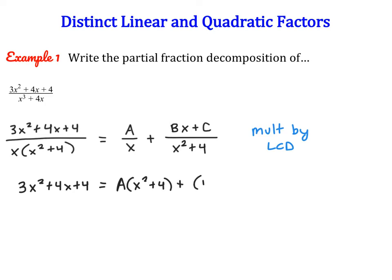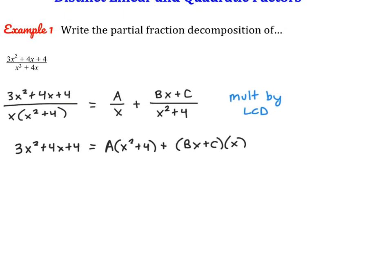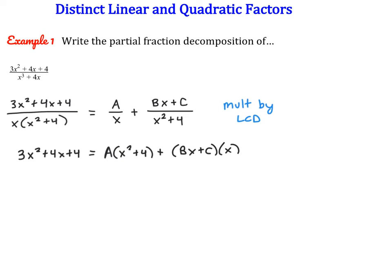For the second term, we end up with Bx plus C times x, because the x squared plus 4 terms cancel out. We're going to take a slightly different approach to solving these types of equations. Previously we substituted convenient values to eliminate terms, but here our general strategy is to create a quadratic equation equal to a quadratic equation and then match up the different terms. The left side stays the same, and on the right side we distribute: ax squared plus 4a plus bx squared plus cx.